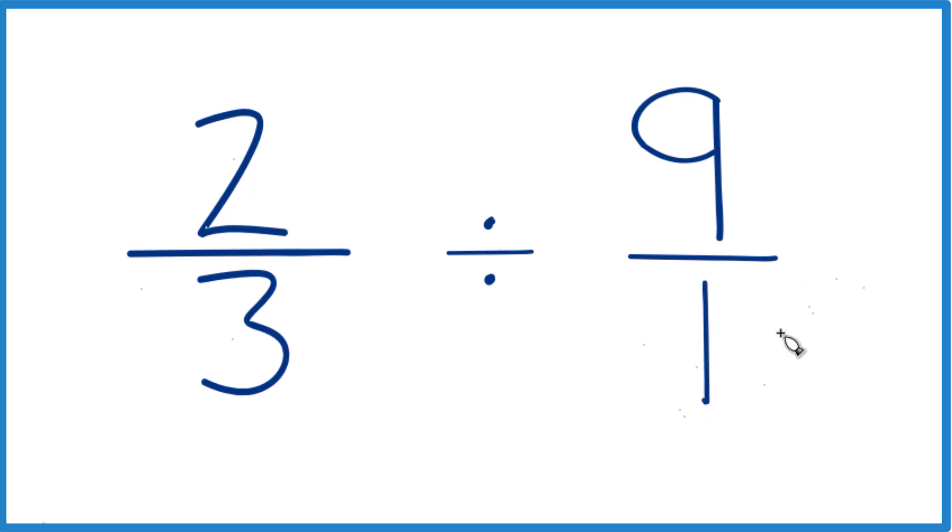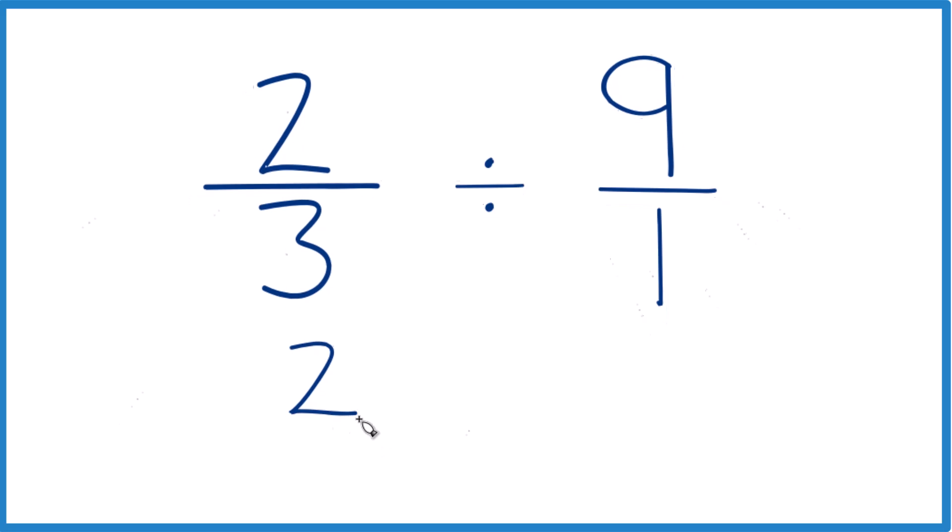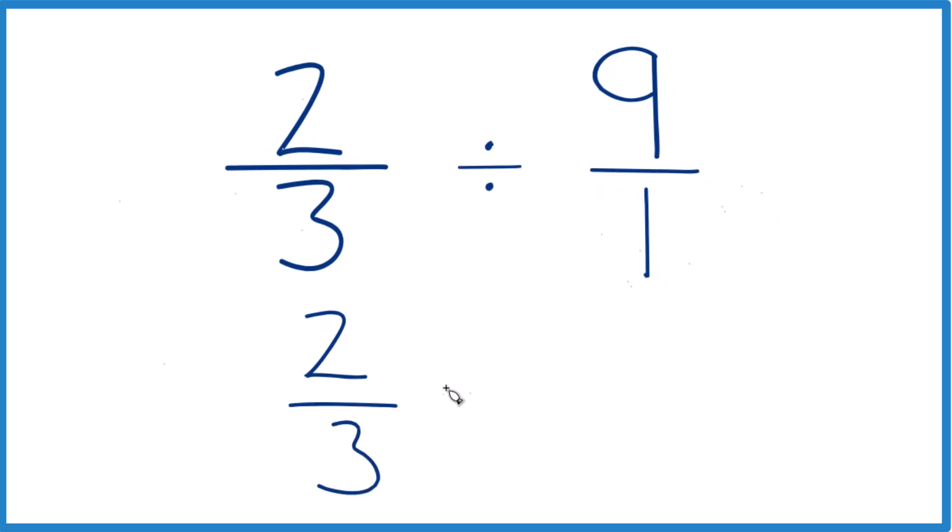but now everything's lining up real nice. We take our 2/3 here, and instead of division, we multiply by the reciprocal of 9/1. So we take the denominator, move it to the top, numerator to the bottom, so 1/9.